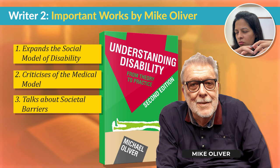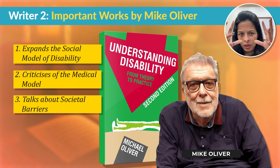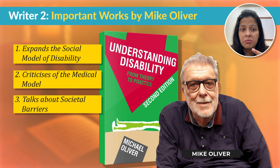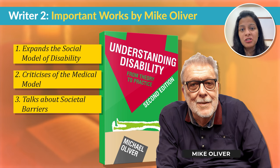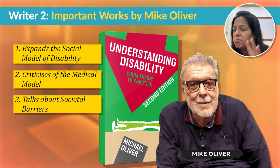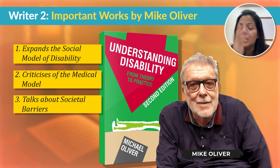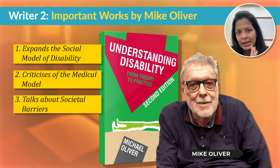Mike Oliver highlights throughout all his works that everyday barriers — inaccessible buildings, inaccessible transportation, and discriminatory practices — make life very difficult for disabled people. These barriers, according to Oliver, are what leads to the marginalization and exclusion of people with disability, rather than their impairments themselves.